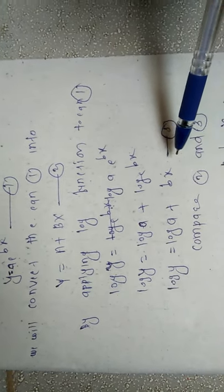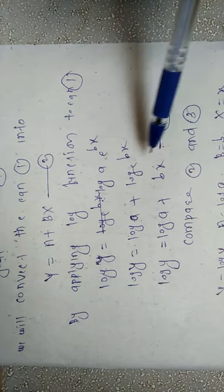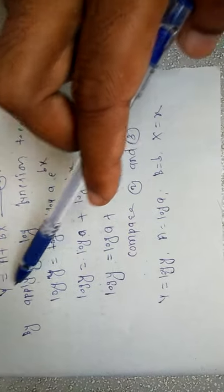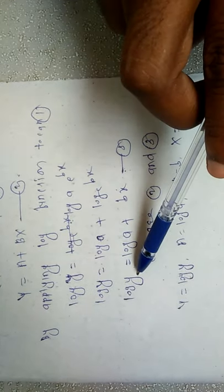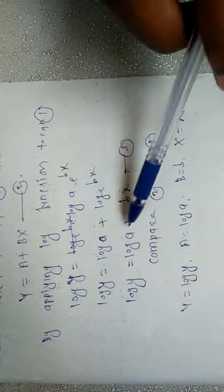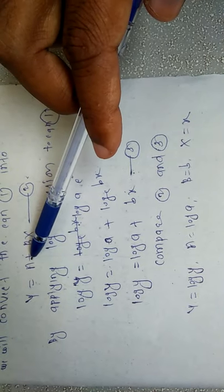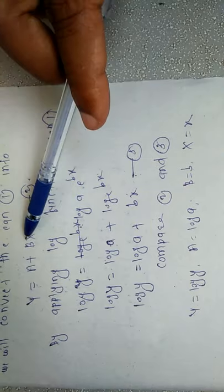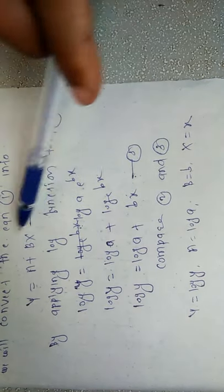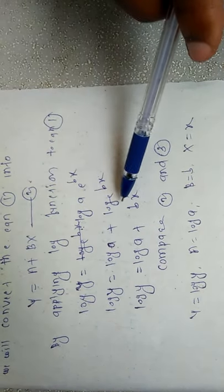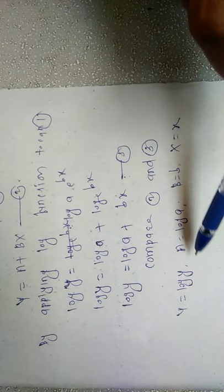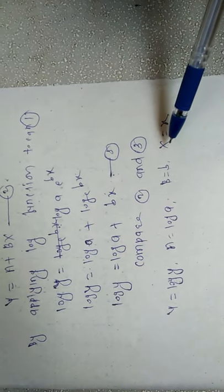Compare equation three with equation two. From this we get: capital Y is equal to log of small y, capital A is equal to log of small a, B is equal to b, and x is equal to x. So to summarize: Y equals log y, A equals log a, and B equals b.